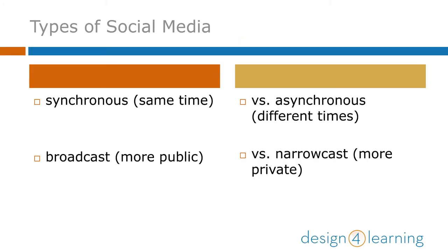There are some contrasts to consider with different social media platforms. Some are synchronous versus asynchronous, and some tools can be used both ways. For example, you can chat with someone in real time in Facebook or respond later to one of their posts. You can view a recorded YouTube video or follow a live stream. Some are broadcast — more public — versus narrowcast, which is more private. This is determined by privacy settings, or by design, as with messaging apps or tools like Snapchat that auto-delete images after viewing.